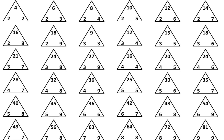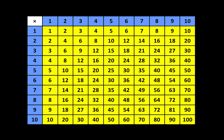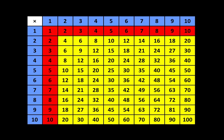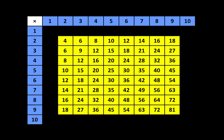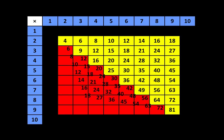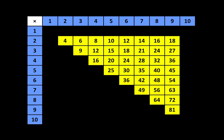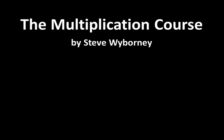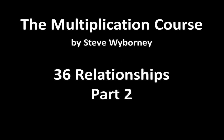We'll take a much more careful look at each of these relationships, because each triangle represents so many different ideas. As a quick recap, we've looked at the multiples of 1, the multiples of 10, the commutative property of multiplication, and we've seen how several of these products appear on the chart in more than one place. And now we've looked at these 36 relationships. This is the Multiplication Course — 36 Relationships, Part 2.